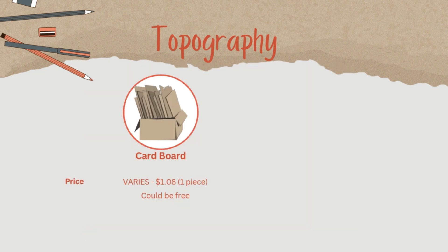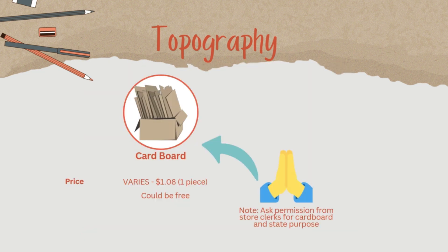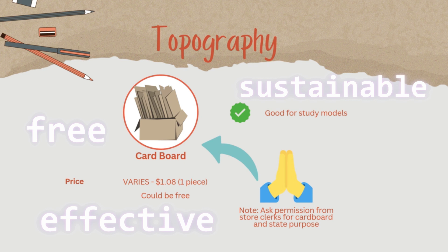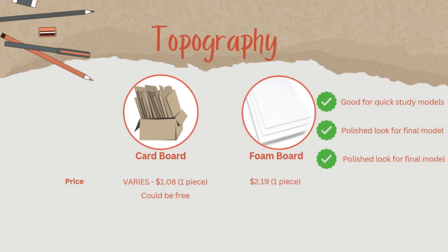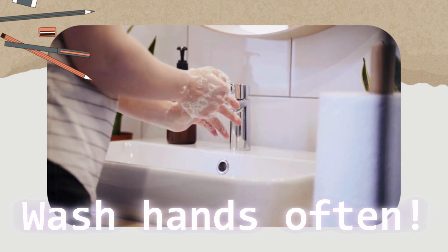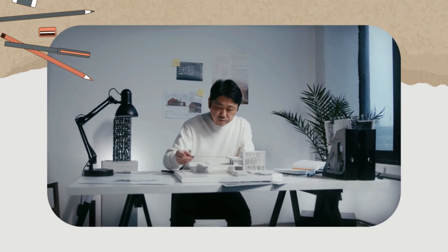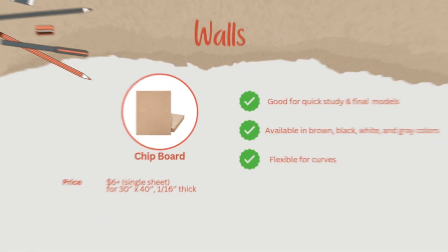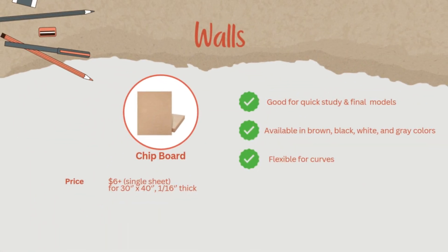You can buy cardboard at Walmart or get it for free — you can even ask staff for leftover packaging boxes. Just be polite and explain your project. It's free, sustainable, and effective. Number two: foam board. Available at craft stores, stationery shops, Walmart, and Target. If you're making an all-white model, be careful because it gets dirty fast, so wash your hands often. Foam board is especially useful for steep topography due to its thickness.